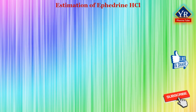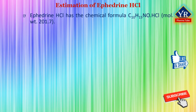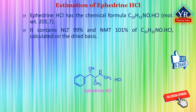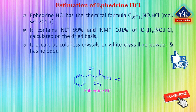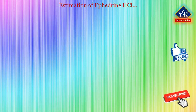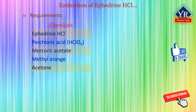Estimation of ephedrine hydrochloride. Ephedrine hydrochloride has the chemical formula C10H15NO·HCl and molecular weight 201.7. It contains not less than 99% and not more than 101% of ephedrine hydrochloride calculated on the dried basis. It occurs as colorless crystals or white crystalline powder with no odor, and it is affected by light. The chemicals required for the estimation include ephedrine hydrochloride, perchloric acid, mercuric acetate, methyl orange, and acetone.